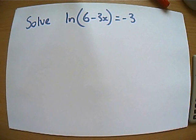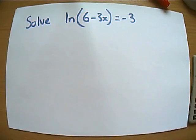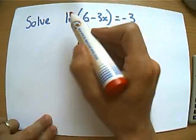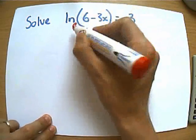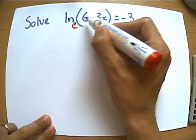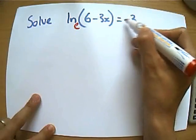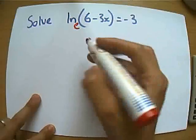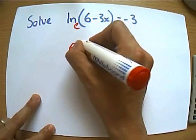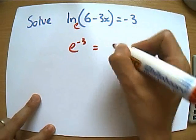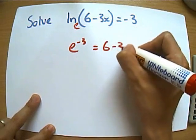And finally for now, what about this one? This one you're starting off as lns. ln of 6 minus 3x equals negative 3. Well for this one, we're going to turn it back into a power equation. So let's remind ourselves, this means what power do I raise e by to get 6 minus 3x? And the answer is negative 3. So I can rewrite this as e to the minus 3 is equal to 6 minus 3x.